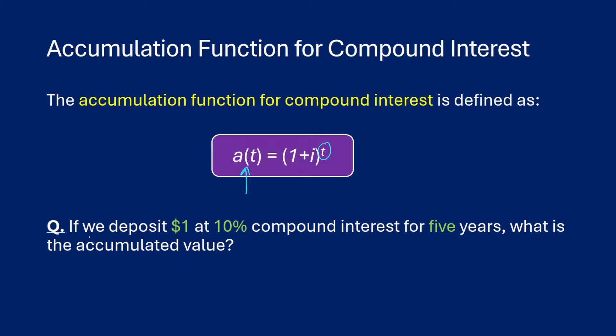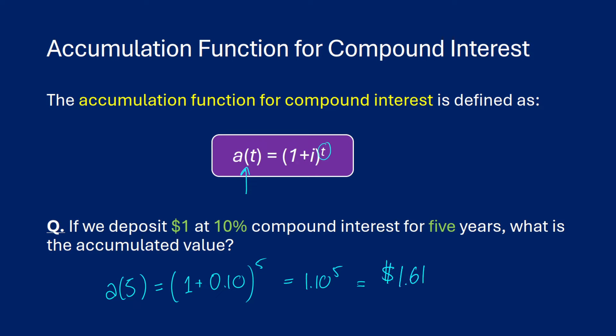To demonstrate this: if we deposit one dollar at 10% compound interest for five years, what is the accumulated value? We calculate a(5), starting with one dollar, multiplying by one plus 0.10, raised to the power of five. So that's 1.10 to the power of five, which equals approximately $1.61.